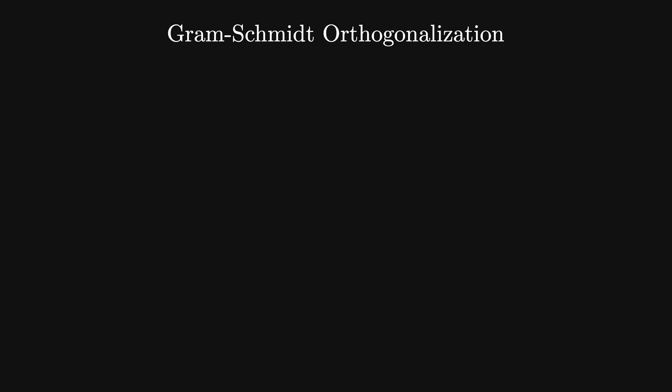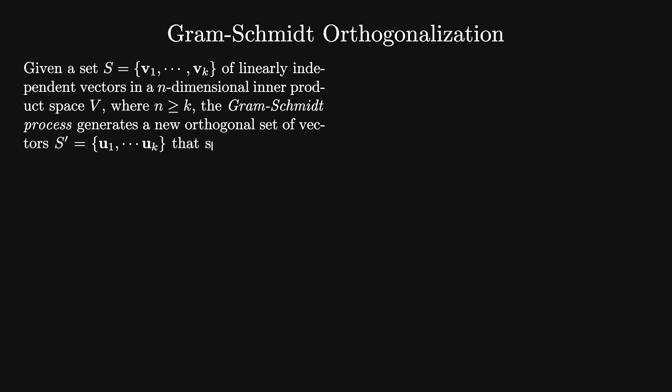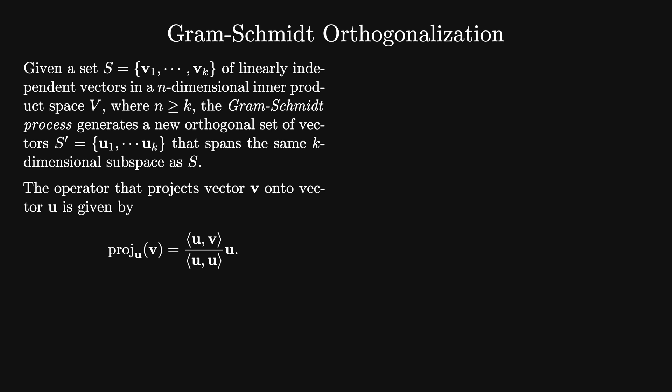Next, we'll have a look at the Gram-Schmidt orthogonalization process. This is an algorithm that creates an orthonormal basis for a vector space or subspace. Imagine we start with a linearly independent set of vectors v1 through vk in an n-dimensional inner product space. The Gram-Schmidt process generates a new set of k orthonormal vectors that spans the same subspace as the original set. This takes advantage of the same projection operator we just used to decompose vectors into components of an orthogonal basis. The projection of v onto u is given by the inner product of u with v divided by the inner product of u with itself.